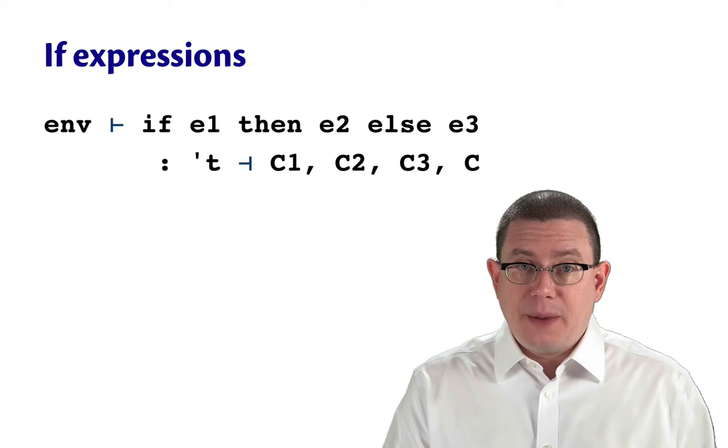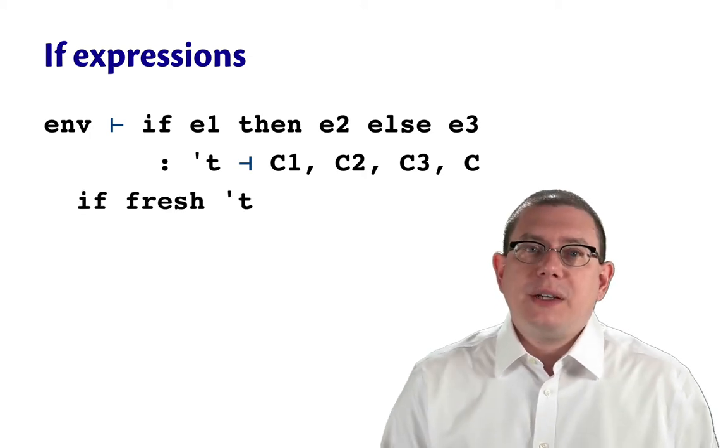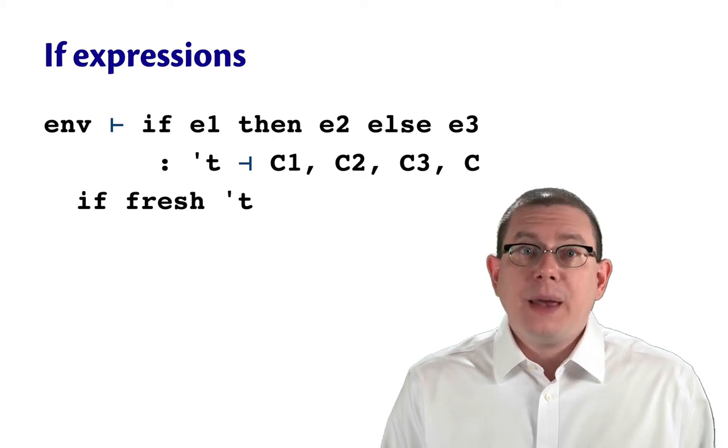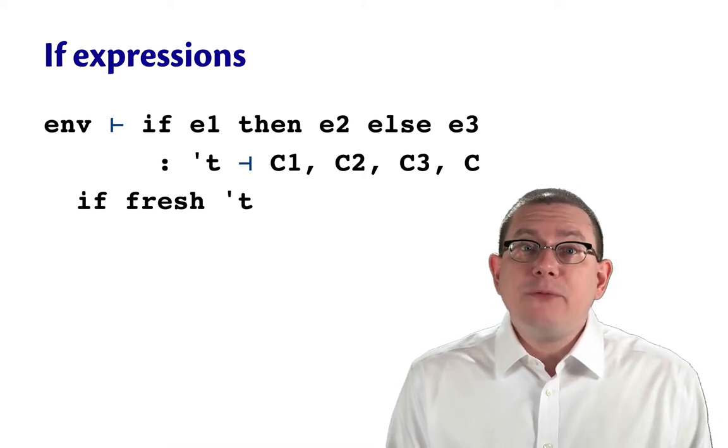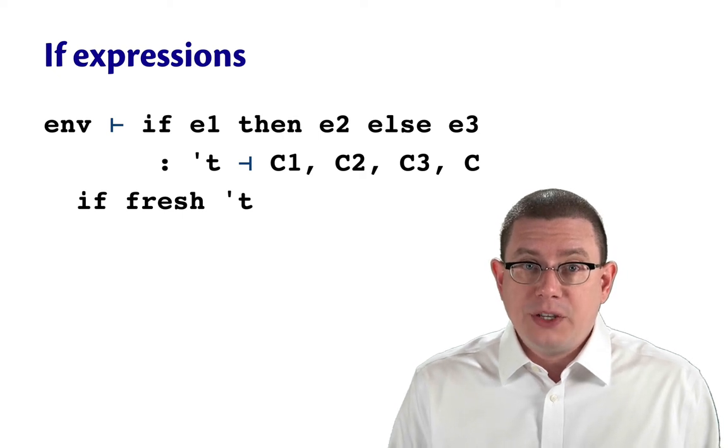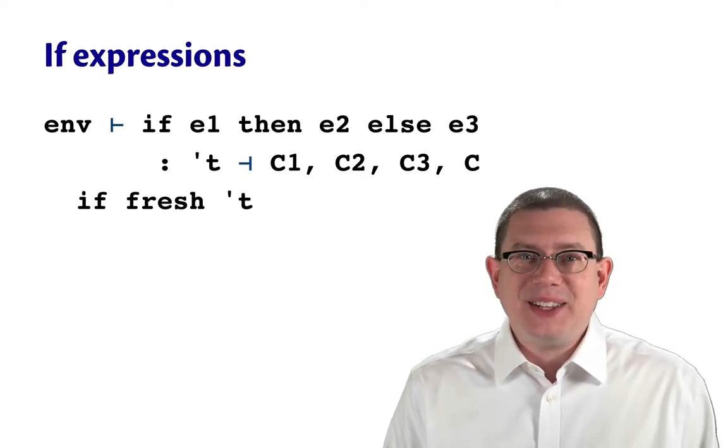Let's take this one step at a time. First, tau here should be a fresh type variable. By fresh, I mean it's never been used anywhere else in type inference for this program. So it's completely brand new, hence fresh.